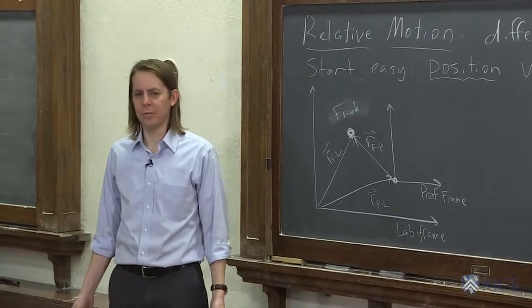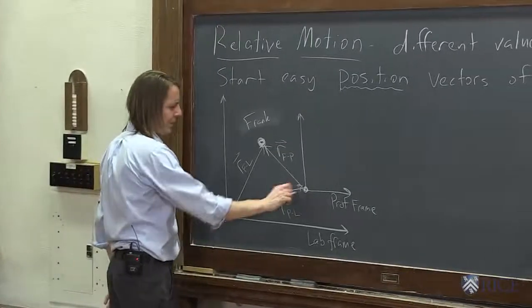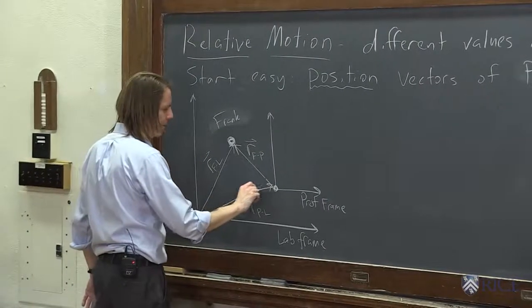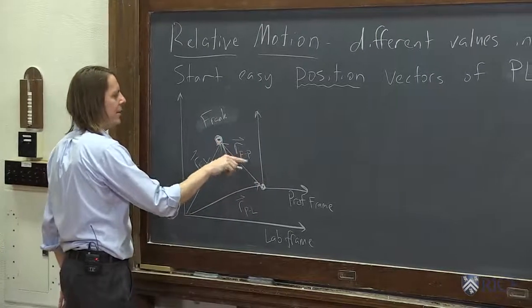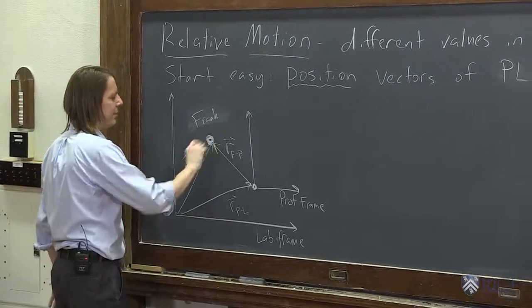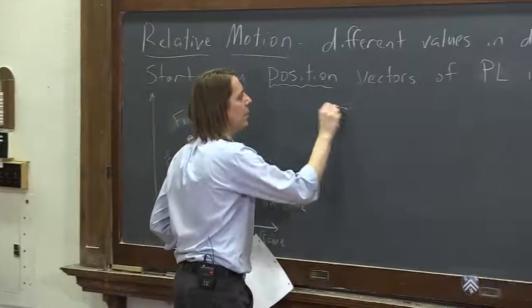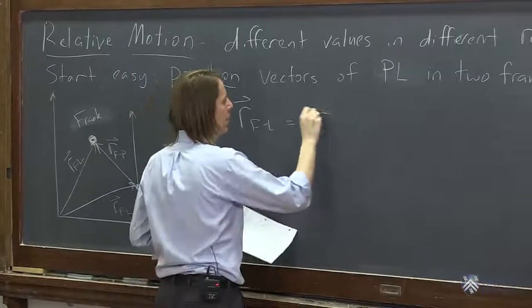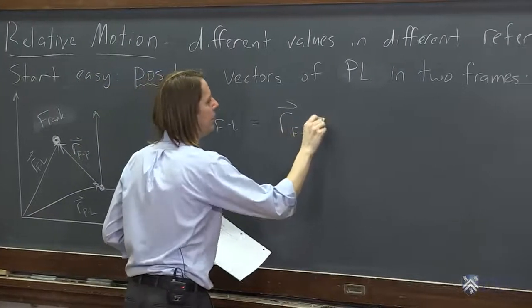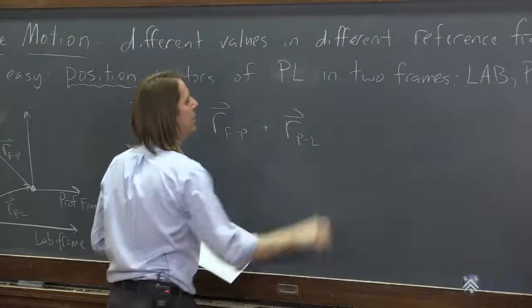So all we did was draw three position vectors. Nothing's even moving, right? Relative frames, you don't have to have things move. It's not that big a deal. But if you look at these, it also looks like we've added three vectors, right? You have r, professor lab frame. And then head to tail, you've added r, Frank in the professor's frame, and you get this vector, r, Frank in the lab frame. So you could write it like this. Plus r, Frank in the lab. That vector is r, Frank in the professor frame, plus that vector, position vector, r, professor in the lab frame.